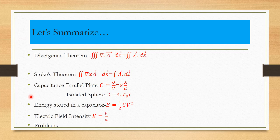We have come to the end of the session. Summary: Divergence theorem — surface integral of a vector equals volume integral of its divergence, relating surface and volume integrals. Stokes theorem — line integral of a vector equals surface integral of the curl of that vector, relating line and surface integrals. Capacitance: parallel plate C = εA/D; isolated sphere C = 4πε₀R. Energy stored: E = ½CV². Electric field intensity: E = V/D.